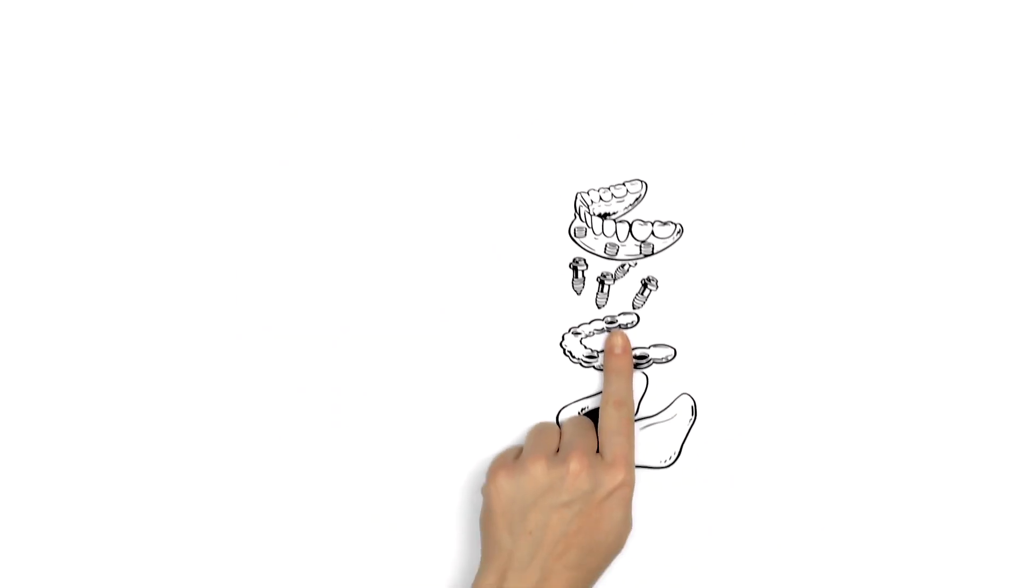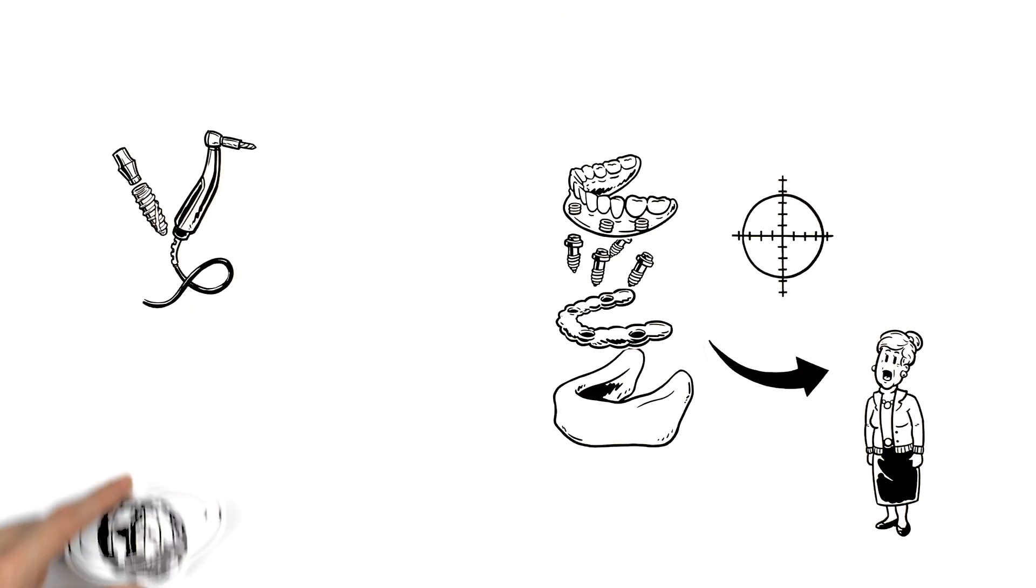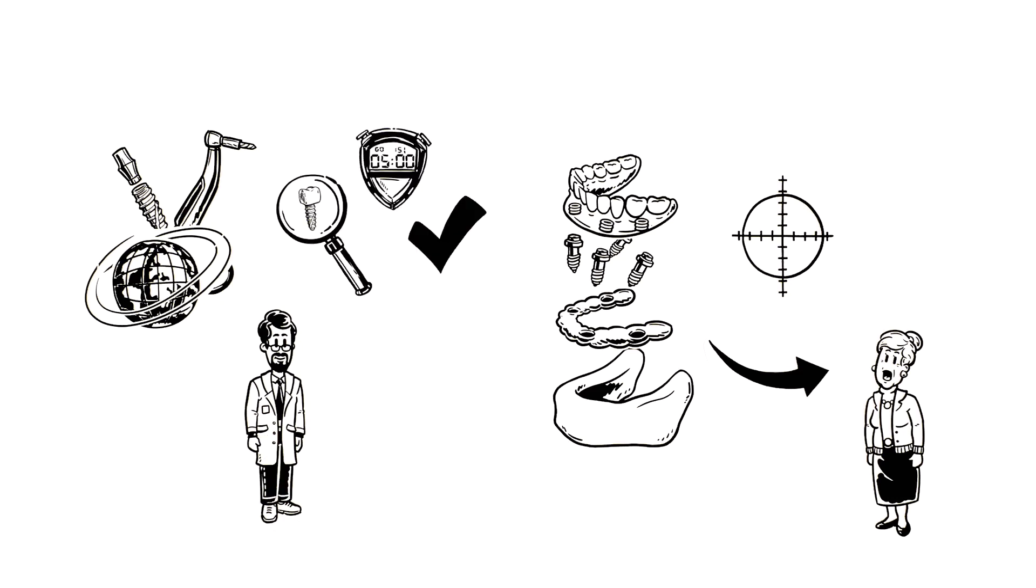Once the surgical guide is created, it is placed in Julia's mouth to ensure precise placement of her implants. Using a dedicated kit of surgical instruments usable for every implant platform, Dr. Franco performs the mini-invasive fast and predictable surgery, resulting in an immediate smile for Julia.